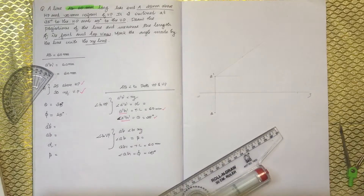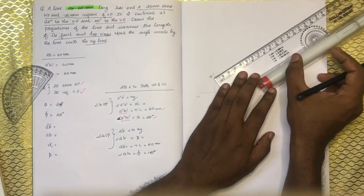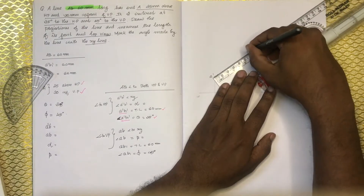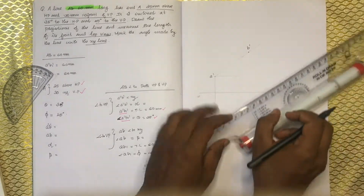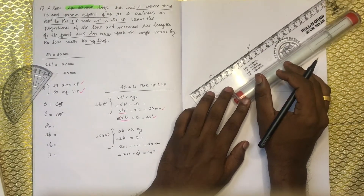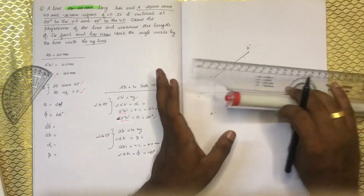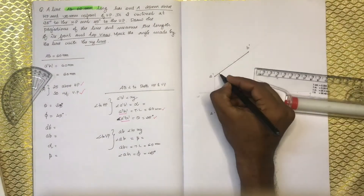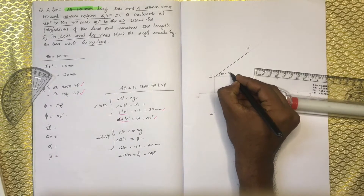The true length is 60mm. This is the point B' — A'B' dash — which is equal to 35 degrees.